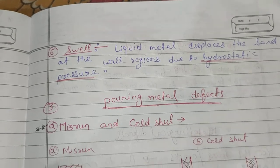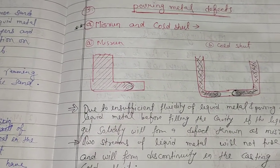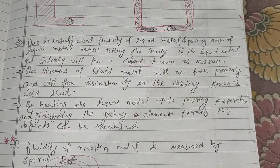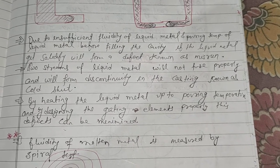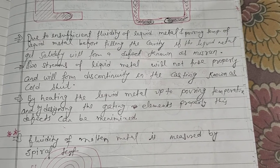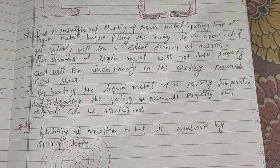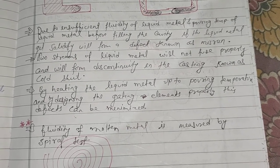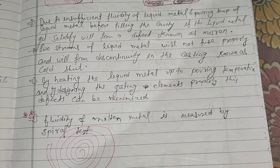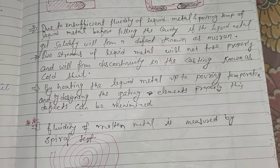The pouring metal defects include misruns and cold shut. Due to insufficient fluidity of liquid metal and low pouring temperature, if the liquid metal solidifies before filling the cavity, it forms a defect known as a misrun. When two streams of liquid metal do not fuse properly, they form a discontinuity in the casting known as a cold shut. By heating the liquid metal to pouring temperature and designing the gating system properly, these defects can be minimized.